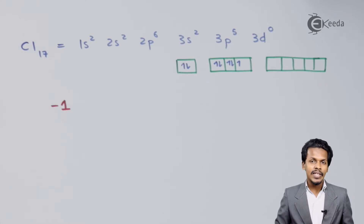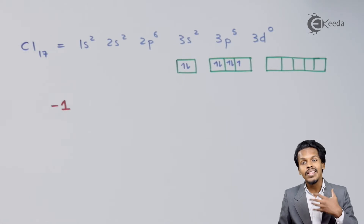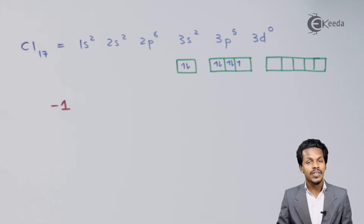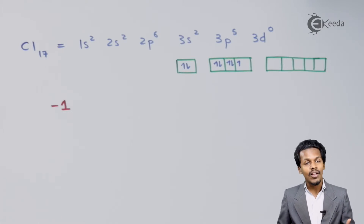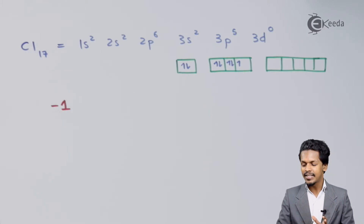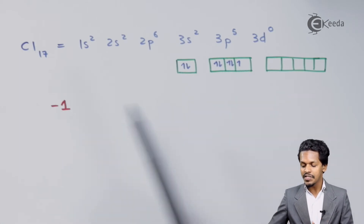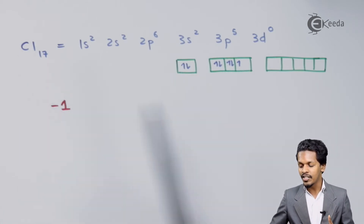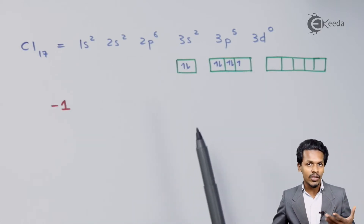But suppose if we compare Chlorine with another electronegative element which is more electronegative than Chlorine, then the oxidation state of Chlorine will be turned into plus 1. So because of this unpaired electron, the oxidation state of Chlorine is minus 1 because it has a capacity to take one electron so as to fulfill the complete octet.